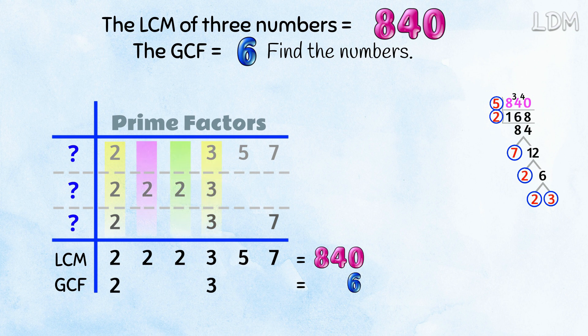Every column has at least one prime. But only the factors 2 and 3 are common to all our numbers. Because they're the primes of the GCF.